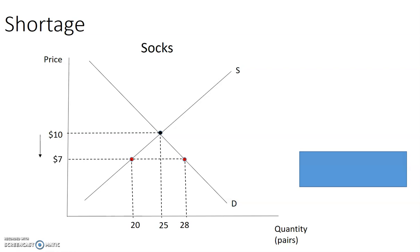This is a disequilibrium that has been created. And that is because at the price of $7, the quantity demanded is greater than the quantity supplied. When the quantity demanded is greater than the quantity supplied and there's an insufficiency in the market, a shortage is created. You can calculate the size of the shortage by looking at the difference between the quantity demanded and the quantity supplied. At $7, the quantity demanded is 28 and the quantity supplied is 20.